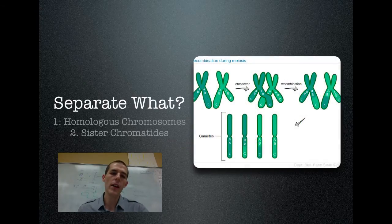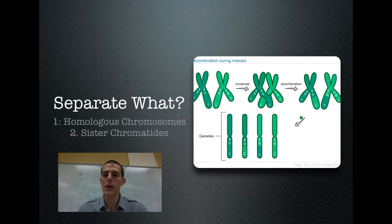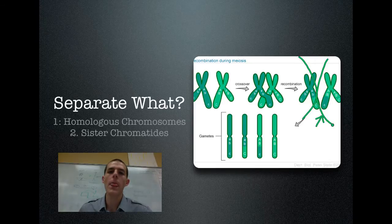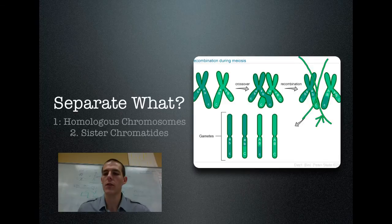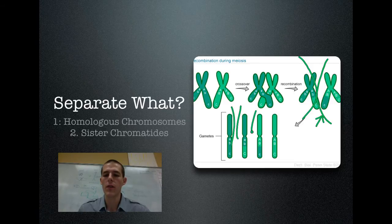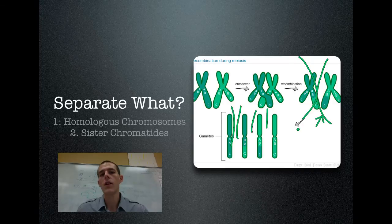The other thing to note is that in mitosis, you are separating homologous chromosomes — these would be one cell and a second cell. Because we are cutting our genetic material in half in meiosis, we are taking these homologous chromosomes and separating them further into their sister chromatids — one cell, two cells, three cells, four cells. So note that mitosis separates homologous chromosomes, while meiosis separates sister chromatids.